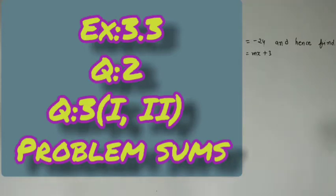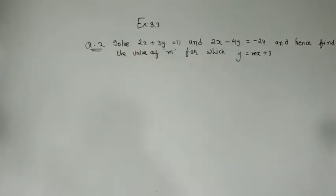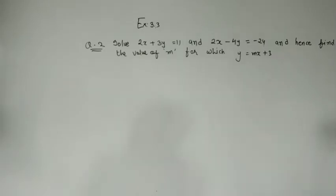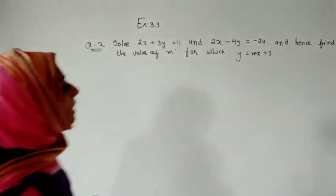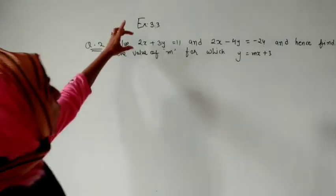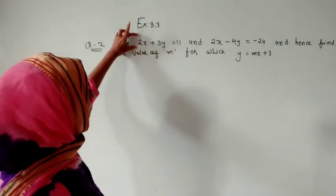This is Exercise 3.3, Question number 2. We have to solve the following equations and find the value of m. Two equations are given: 2x plus 3y equals 11, and 2x minus 4y equals minus 24. We also have to find the value of m for which y equals mx plus 3. The concept here is that we have to use the substitution method.